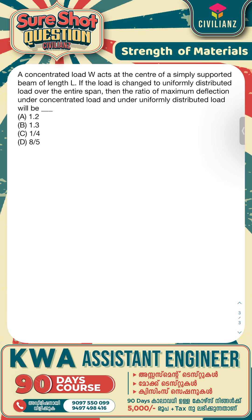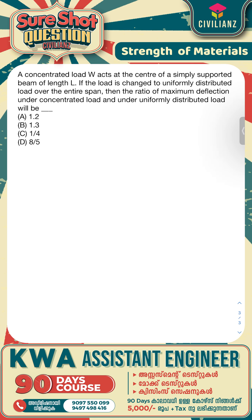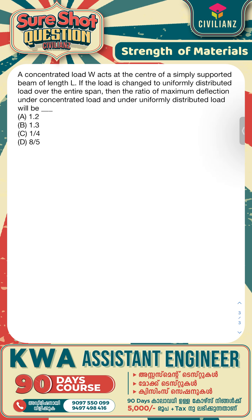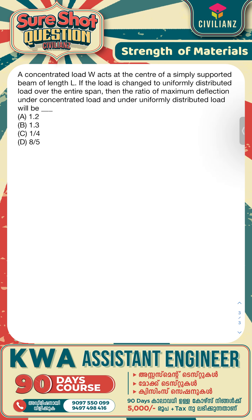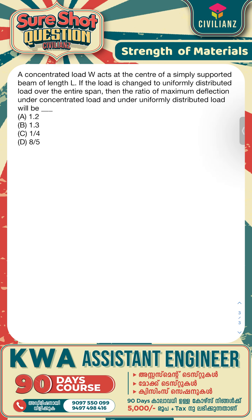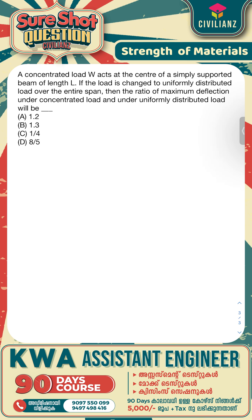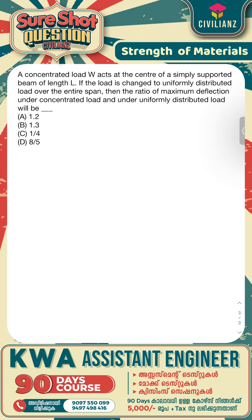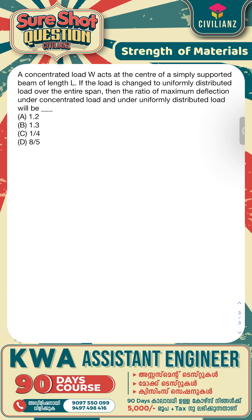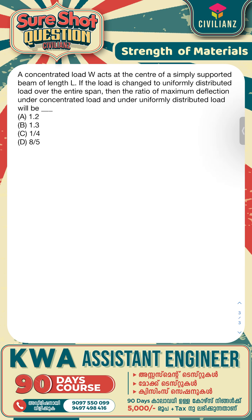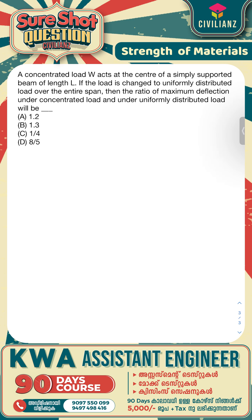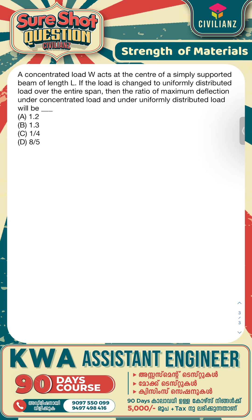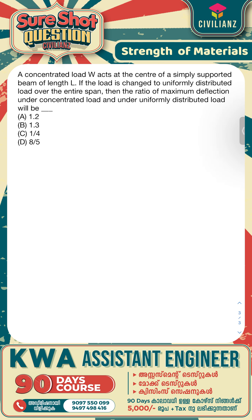A concentrated load acts at the center of a simply supported beam of length L. If the load is changed to a uniformly distributed load over the entire span, then the ratio of maximum deflection under concentrated load to that under uniformly distributed load will be: option A 1.2, option B 1.3, option C 1.4, and option D 8/5.